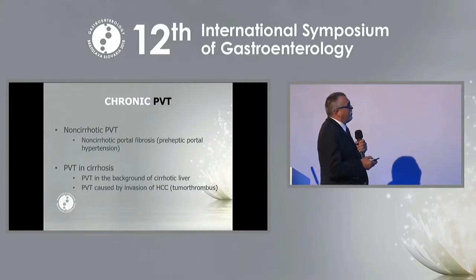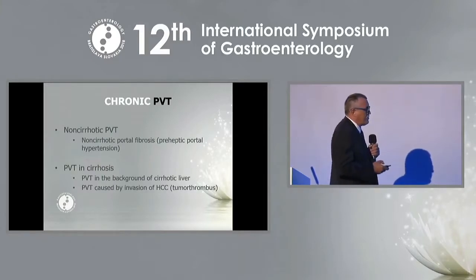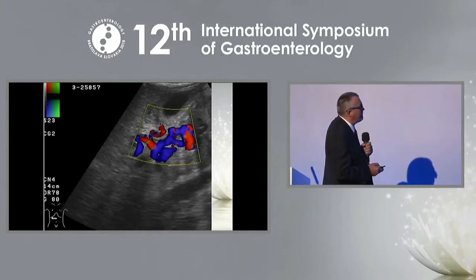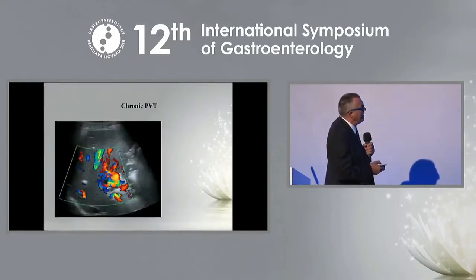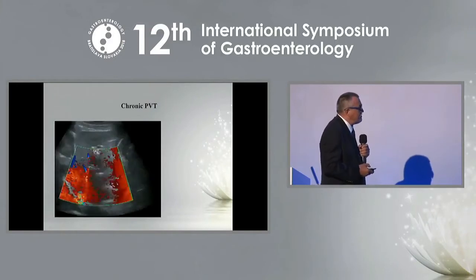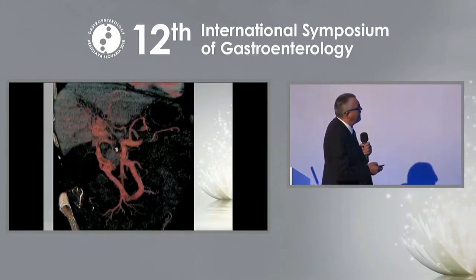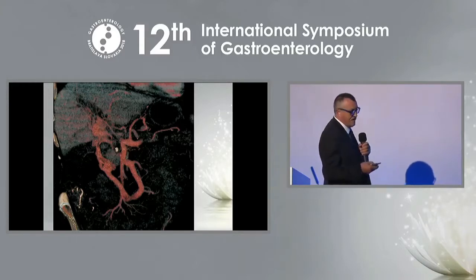Chronic portal vein thrombosis very often appears in non-cirrhotic portal fibrosis, and in cirrhosis it is frequently associated with hepatocellular carcinoma. Diagnosis is straightforward: you see the characteristic worm-like structures on Doppler ultrasound. On CT, the anatomical structure of the portal vein within the liver is not visible — only branches outside the liver are seen.